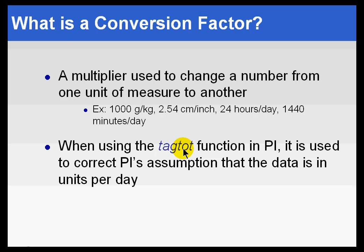So if you're going to be using the tag-tote function in PI, it is used specifically to correct the assumption that PI makes that the data is always in units per day. Let me explain.